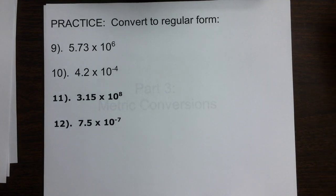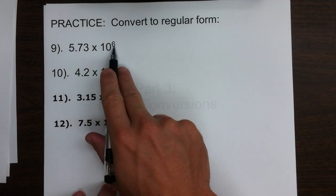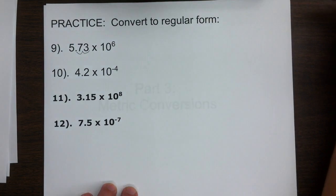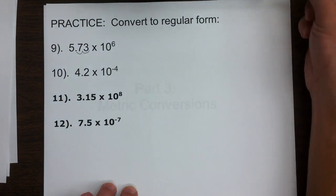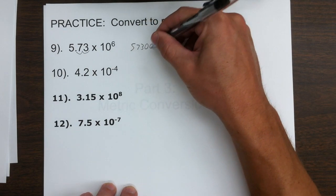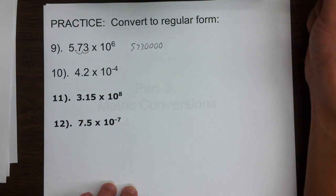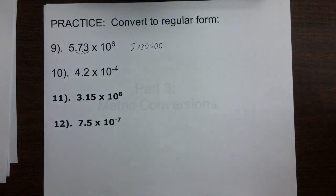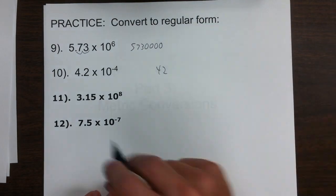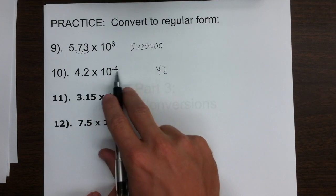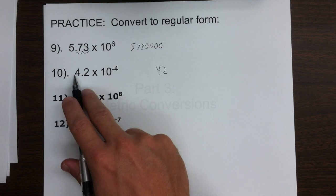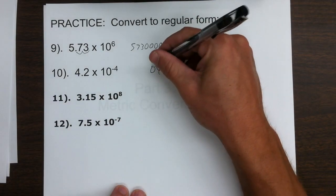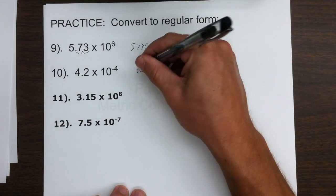Now we're going the opposite way — from standard scientific notation into a regular number with all of the leading and trailing zeros. Here we have 6 places to move the decimal: 1, 2, but we still have 4 more places, so we need zeros as placeholders — giving 5, 7, 3 followed by zeros: 1, 2, 3, 4. For the negative exponent example, this number is going to be less than 1 and will have leading zeros. We have a 4 and a 2, and the number of zeros in front will always be 1 less than the exponent magnitude, because we move one place past the 4 and still have 3 more, giving 3 zeros in front.